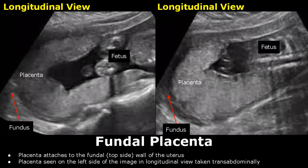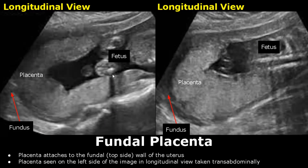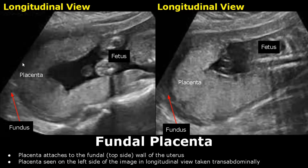In a fundal placenta, placental attachment is at the wall of the fundus. It is attached to the upper part of the uterus. In a transabdominal longitudinal view, the placenta will be seen on the left side of the image. We can see a curved placenta attached to the fundal wall of the uterus.